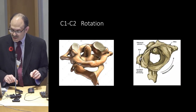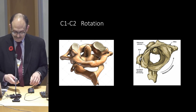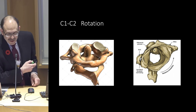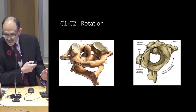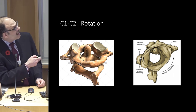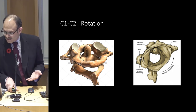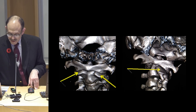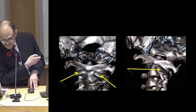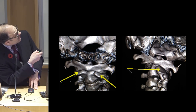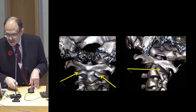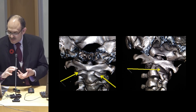This is a representation of pretty much normal rotation — normal position facing forward and then rotation. And here is facing forward versus turned, showing the facets: the joint between C1 and C2 is opening up when turned.